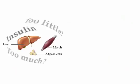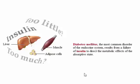One way that scientists learn about the endocrine system is to observe the symptoms of patients who suffer from diseases that alter hormone secretion. Diabetes mellitus, the most common disorder of the endocrine system, results from a failure of insulin to direct the metabolic effects of the absorptive state.